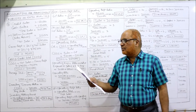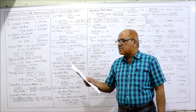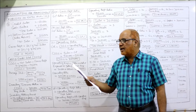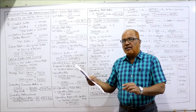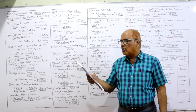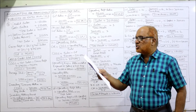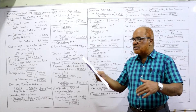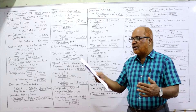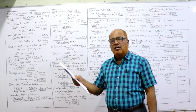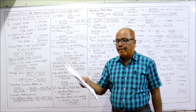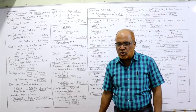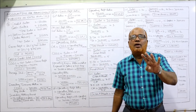Problem number 9: the following is the profit and loss account of Electro Matrix Limited for the year ended. Debit side: opening stock, purchases, wages, gross profit. Credit side: sales, closing stock. In the profit and loss account: gross profit brought down 2,01,000; interest on investment; profit on sale of investment; administrative expense; selling and distribution expense; non-operating expense; net profit 80,000. You are required to calculate gross profit ratio, net profit ratio, operating ratio, and operating profit ratio.